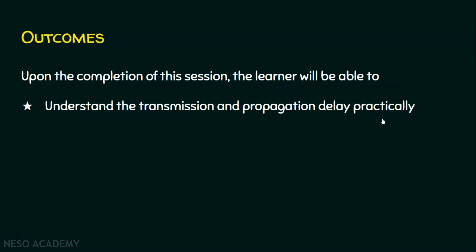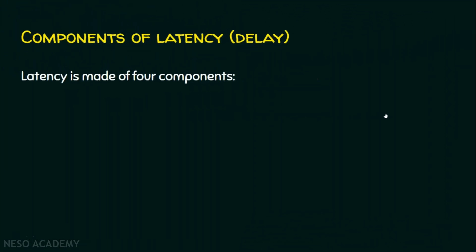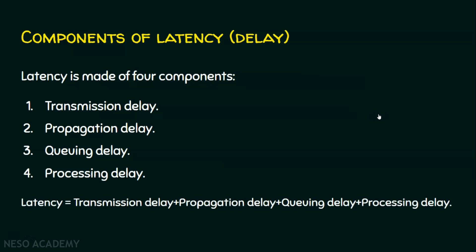Let's revisit what are the various components of delay. Basically, delay is made up of four components: the transmission delay, the propagation delay, queuing delay, and finally the processing delay. The overall delay, that is the latency, is equal to transmission delay plus propagation delay plus queuing delay plus processing delay.